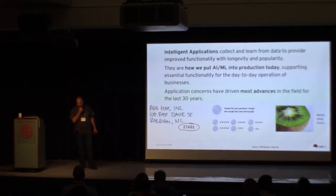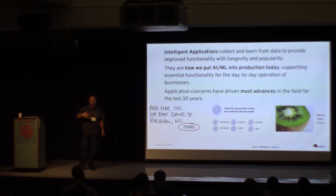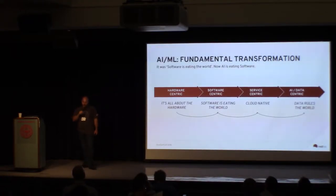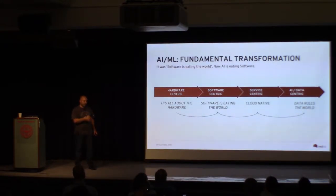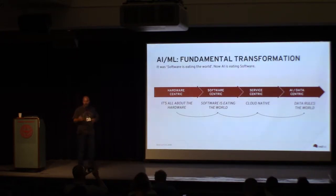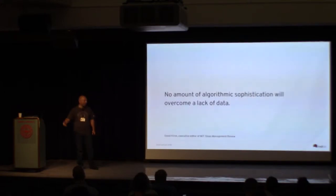It's incredible how fast this is moving right now — how fast new applications emerge, or boundaries are pushed, or trained models get better. We see this in the continuum of recent changes in the software industry: from a hardware-centric model, we went to 'software is eating the world,' then to cloud-native, and now from cloud-native we are going to 'data rules the world.'